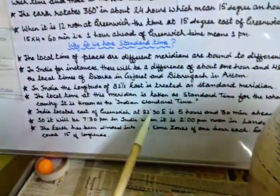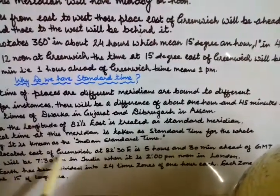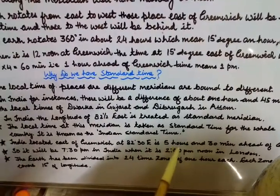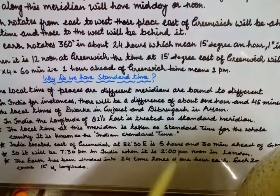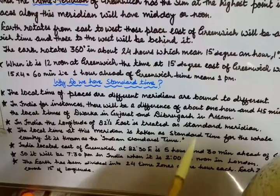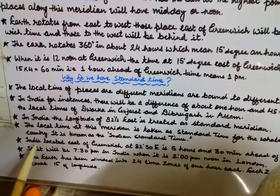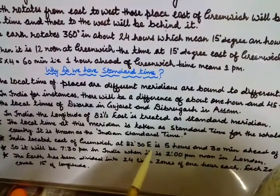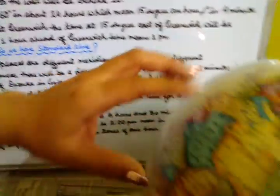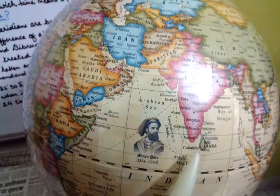India is located east of Greenwich at 82 degrees 30 minutes east, and is 5 hours and 30 minutes ahead of GMT. So if it is 12 o'clock in India, all watches across the country show 12 o'clock — that is our Indian Standard Time. Counting the time zones from the prime meridian: India is 5 and a half time zones ahead of GMT.